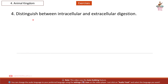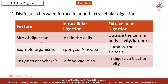Question 4: Distinguish between intracellular and extracellular digestion. Feature — site of digestion: intracellular digestion occurs inside the cells; extracellular digestion occurs outside the cells, in the body cavity or lumen. Example organisms: intracellular digestion — sponges, amoeba; extracellular digestion — humans and most animals. Enzymes act: in intracellular digestion — within food vacuoles; in extracellular digestion — in the digestive tract or cavity.